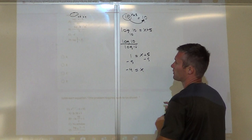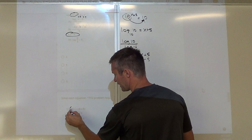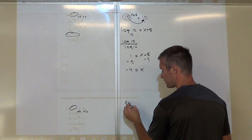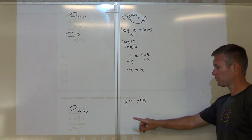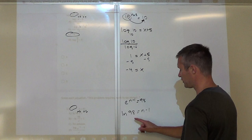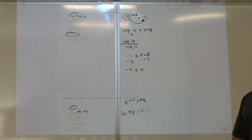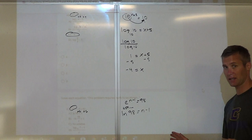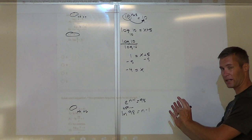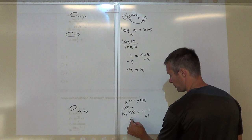Here, get the exponent by itself — add 6. So e to the n minus 1 equals 98. Since it's base e, we use natural log: ln(98) equals n minus 1. If I type that into my calculator, I get approximately 4.58 — it doesn't give a whole number. So we leave it in exact form: n equals natural log of 98 plus 1, which is option A.